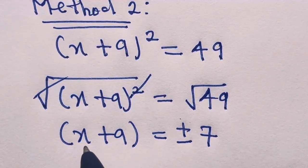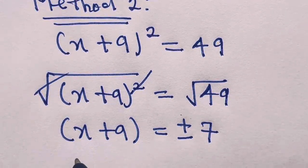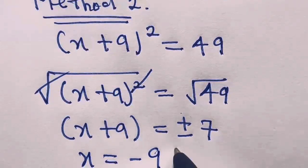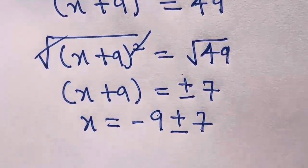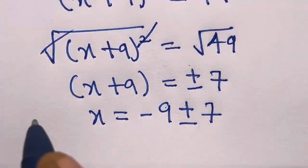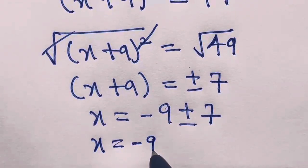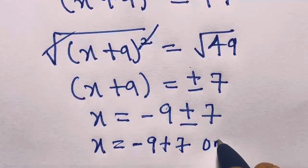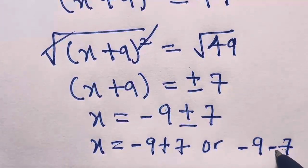So we have x plus 9 equals plus or minus the square root of 49, which is 7. Transferring plus 9 to the other side gives minus 9, so we have x equals minus 9 plus or minus 7. This means x equals minus 9 plus 7 or minus 9 minus 7.